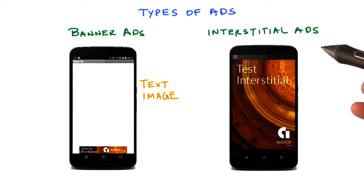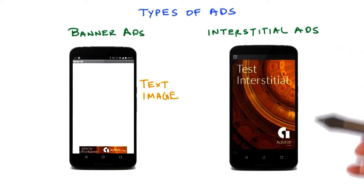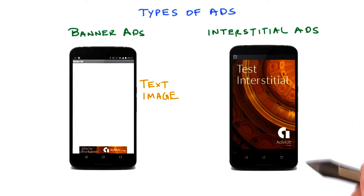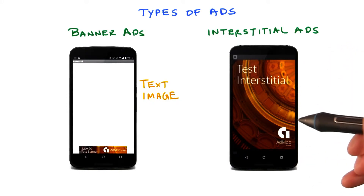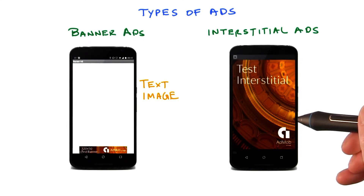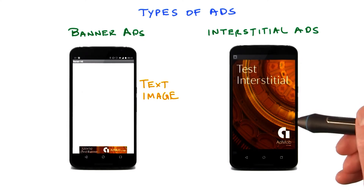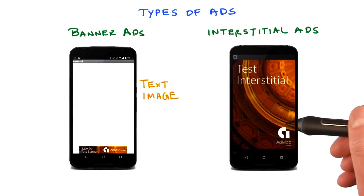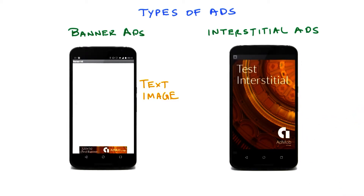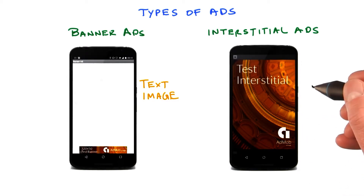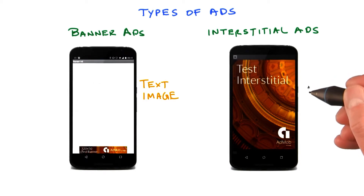Interstitial ads, on the other hand, will cover the entire screen. That makes it really important to decide when to show an interstitial ad, since your app cannot display anything while the interstitial ad is being displayed. Interstitial ads are perfect when there is a natural break in your app, for example, between levels of a game.